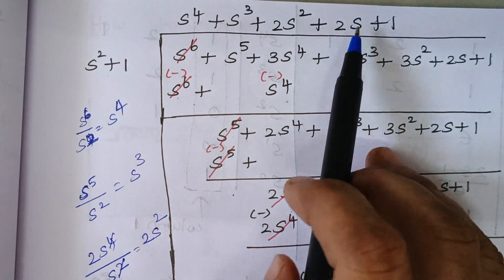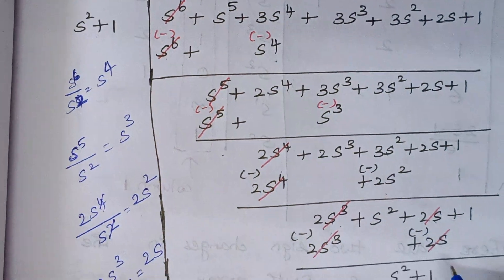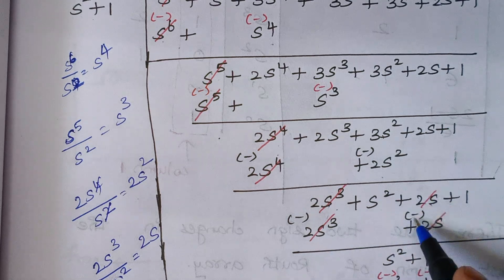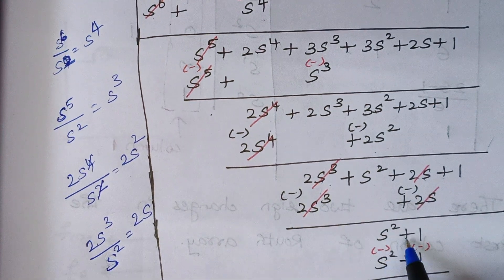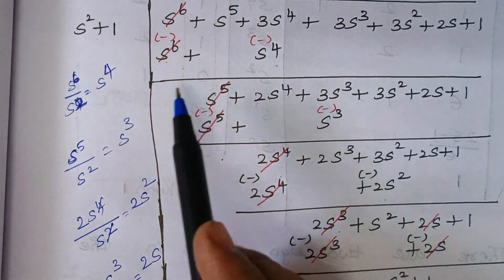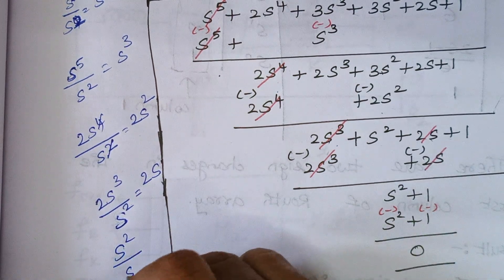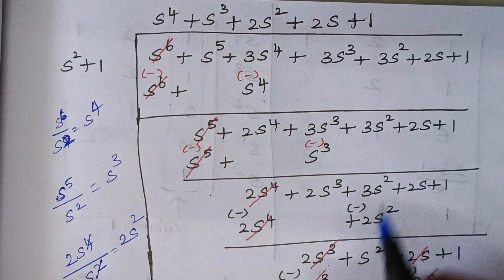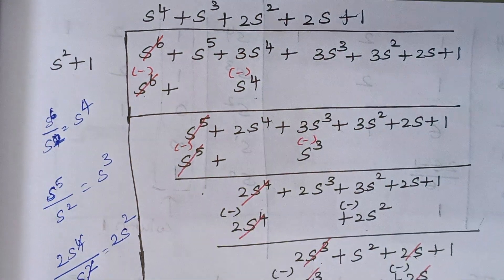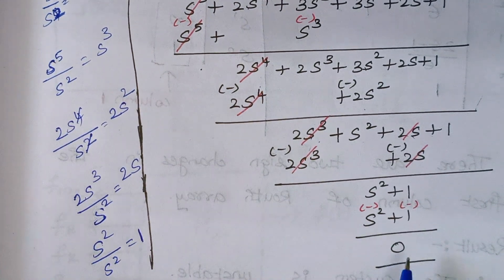Multiply: 2S × S² gives 2S³, and 2S × 1 gives 2S, written accordingly. On subtraction, those terms cancel each other and the final remainder is S² plus 1. Here the first term is S² and the divisor first term is also S², so S² divided by S² gives 1. Multiply: 1 × S² gives S², and 1 × 1 gives 1, so S² plus 1. Subtracting gives a final answer of 0.